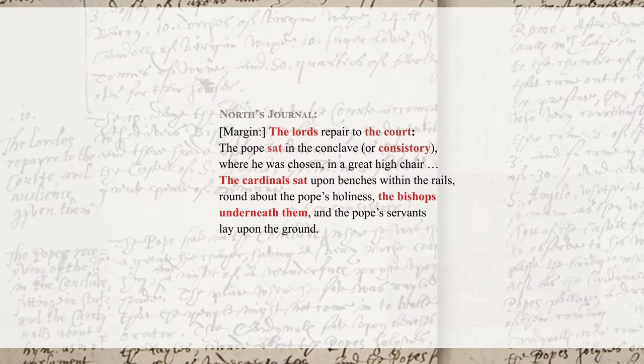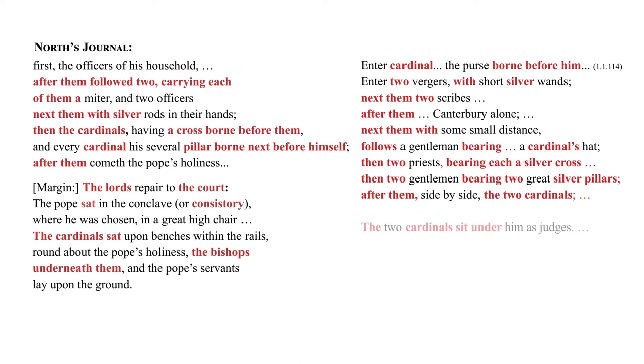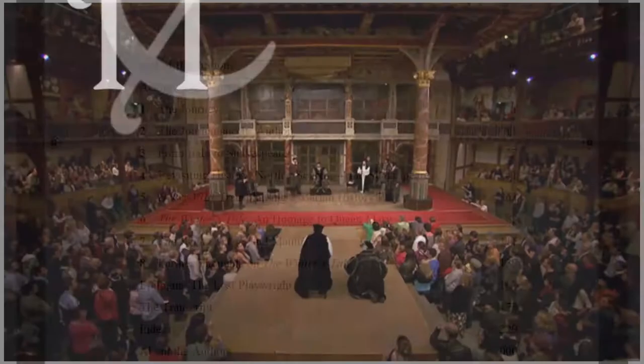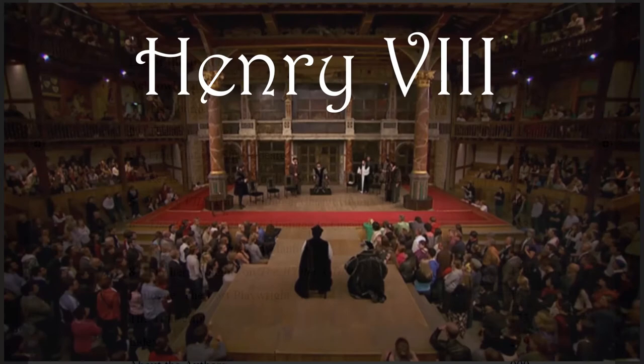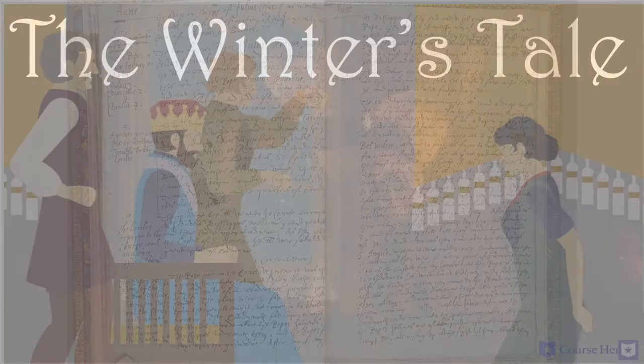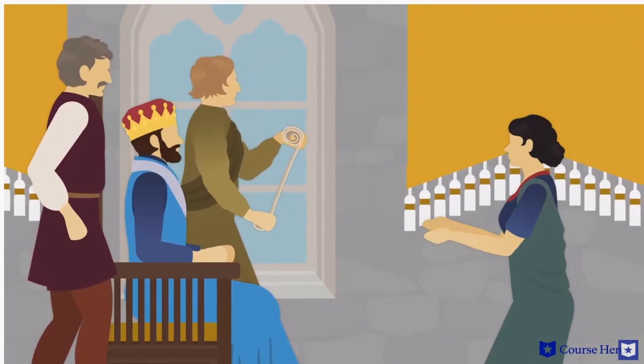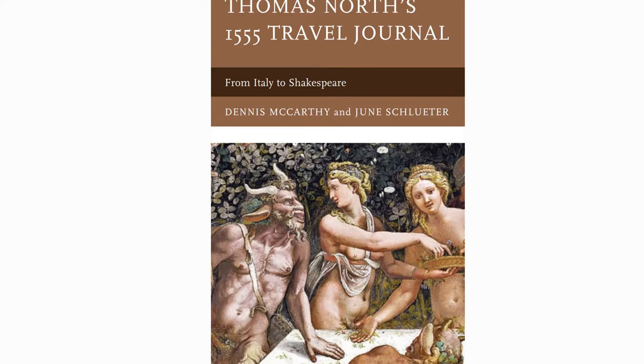Even more significantly, we have found Thomas North's handwritten, unpublished travel journal, and North clearly reused his entries and the experiences they described in the plays. This includes many scenes in Henry VIII and The Winter's Tale. In fact, North's trip was a kind of winter's tale and helps us understand the play as an allegory for the life of Queen Mary, focusing on the divorce of her mother Catherine and filled with the stunning visuals and experiences of North's trip to Rome.